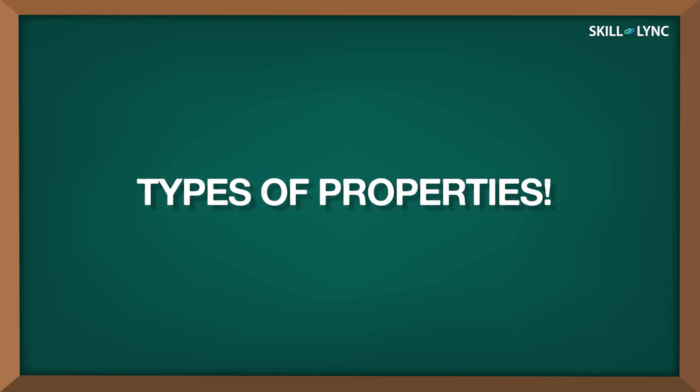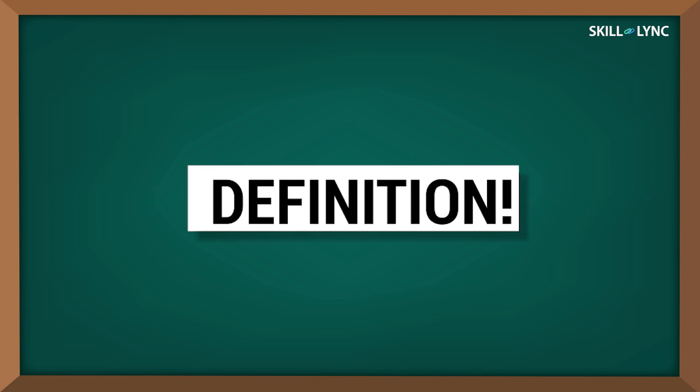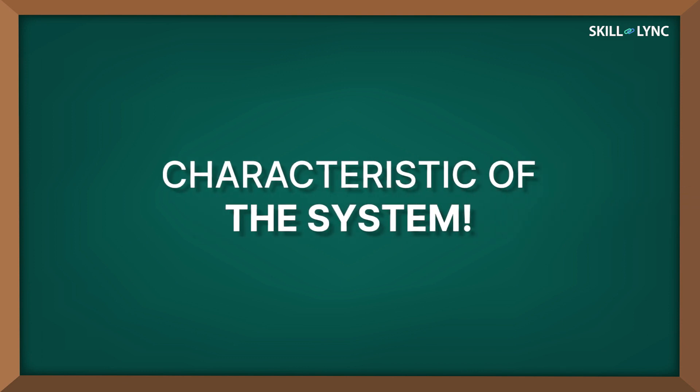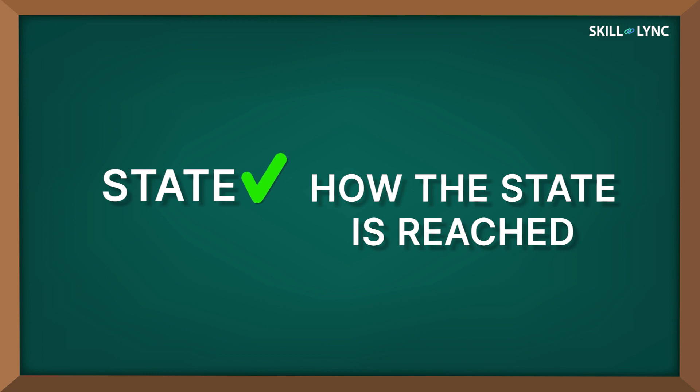Today, we will discuss how these properties are categorized into two types. First of all, we must know the actual definition of a property. A property of a system can be defined as a characteristic of the system which solely depends upon its state. It must be noted that it doesn't depend upon how the state is achieved.